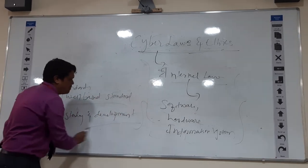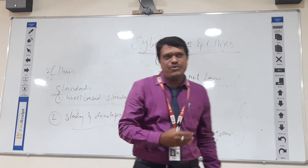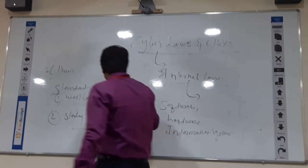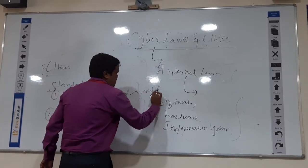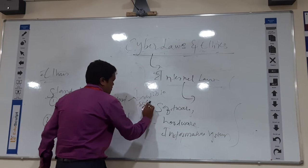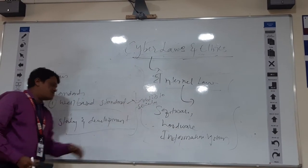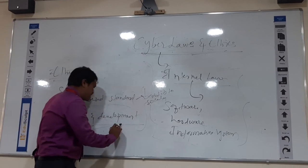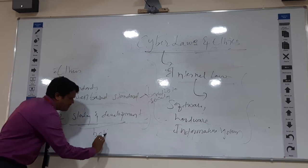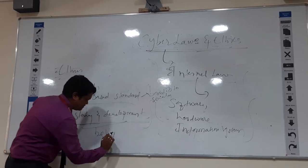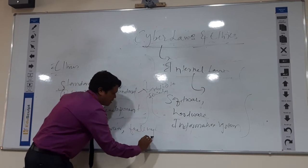Well-based standards are completely related to society — benefits to the society. The things that come under Study and Development Standards are: Ethics, Culture, and Love. We can see Behaviour and Feelings, and Quality as part of these standards.